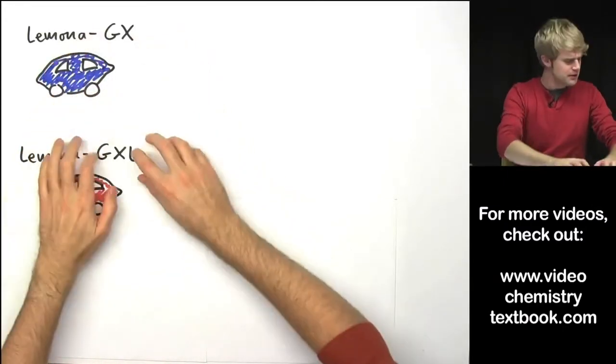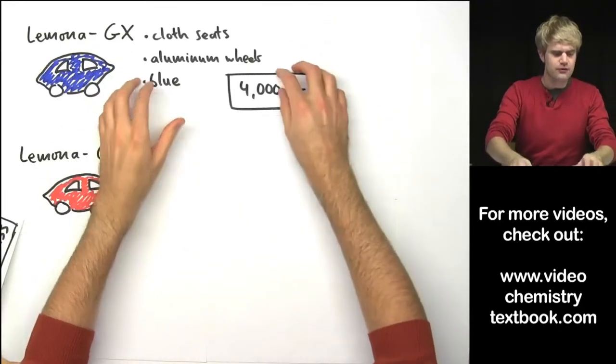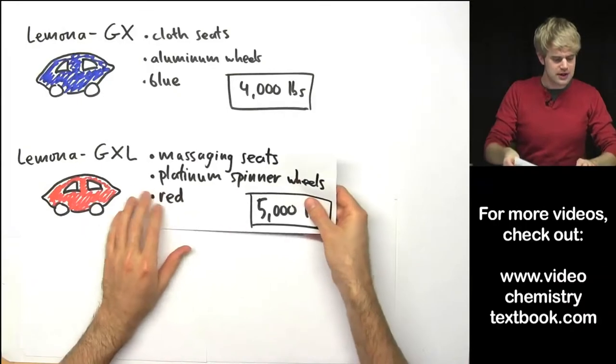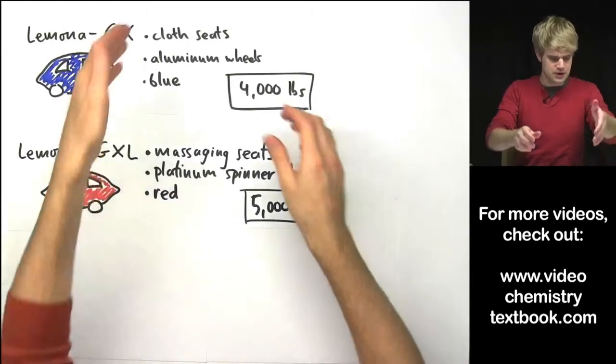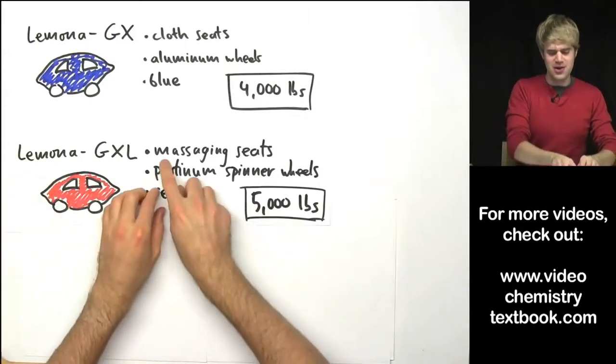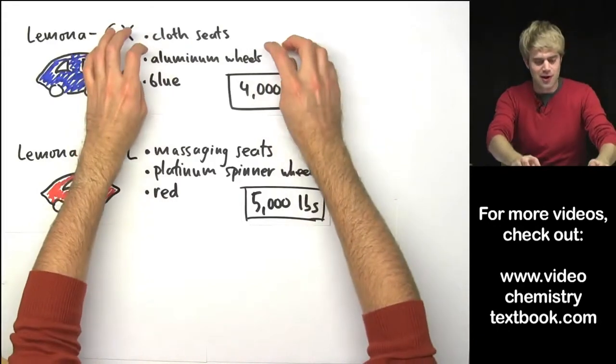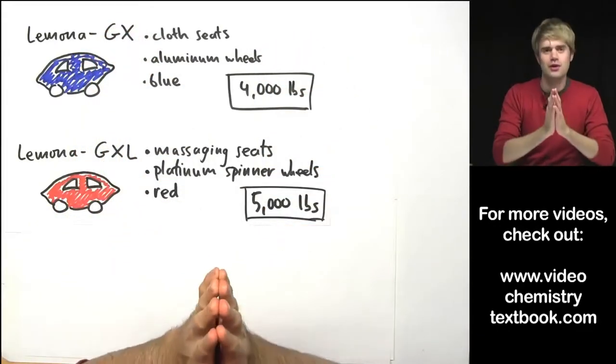The Lamona GX and the Lamona GXL. And these two models have different features that are unique to each one of them. The GX is blue, the GXL is red and this one is kind of a luxury model. It's got massaging seats and platinum spinner wheels whereas this one only has cloth seats and cheap aluminum wheels.